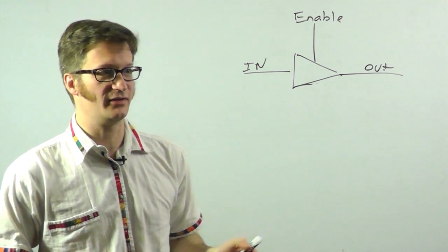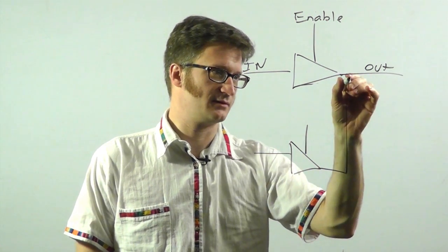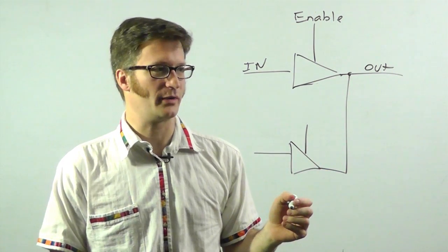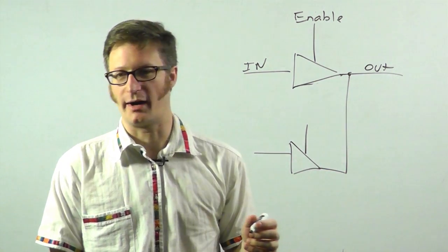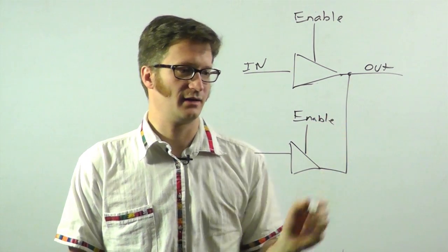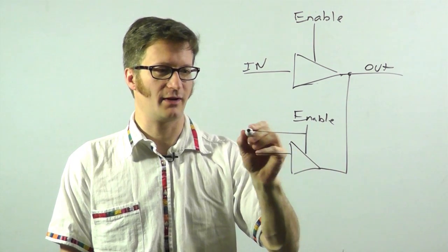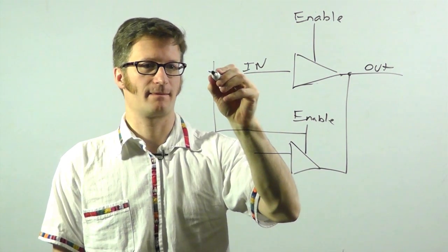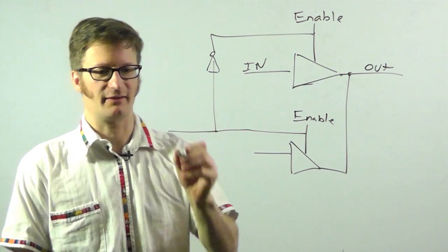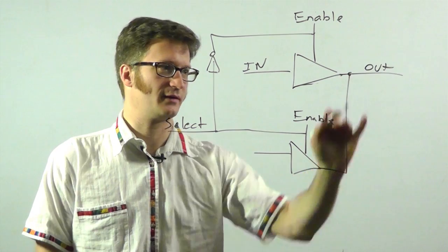What this allows you to do is have multiple circuits connected directly to each other. Usually this would be a no-no, having two outputs connected directly together with just a wire. But if I have an enable on this one as well, then I can have data coming from this source, and then maybe I have an inverter here, and this is my select. So I can either have data coming from this or data coming from this.